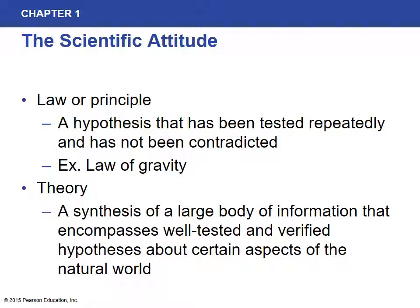A law or principle is a hypothesis that has been tested repeatedly and has never been contradicted — for example, the law of gravity, which shows that objects are drawn toward large masses like Earth. A theory is a synthesis of a large body of information encompassing well-tested and verified hypotheses about aspects of the natural world. Examples include the quark theory of the atomic nucleus in physics, the theory of metallic bonding in chemistry, and the cell theory in biology. Theories are not fixed — they undergo change over time.